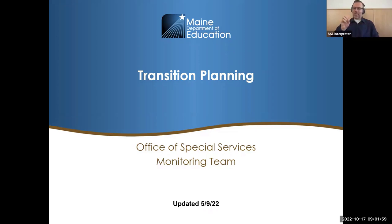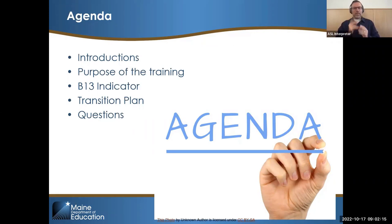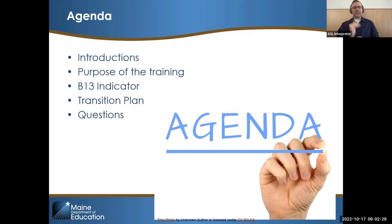I forgot to update this — it was actually updated this morning with some fresh links. So we're going to do brief introductions just so you know who we all are, although I do see many familiar names in the participants list. We'll go over the purpose of the training, all the pieces and parts of the B13 indicator, examples of each section of a transition plan, and make sure any questions get answered.